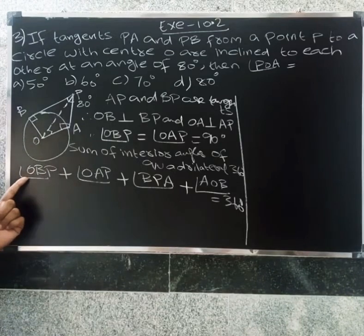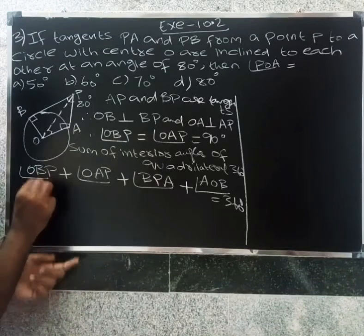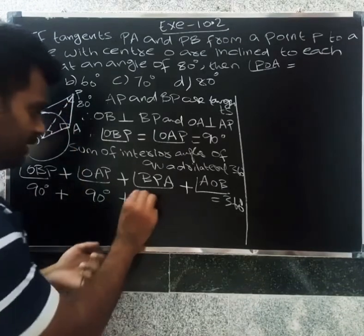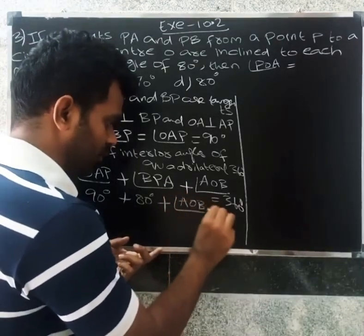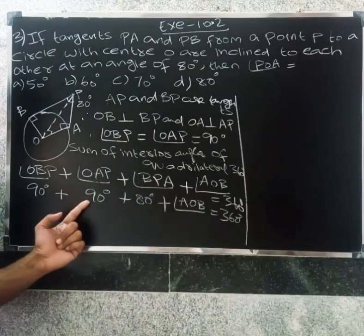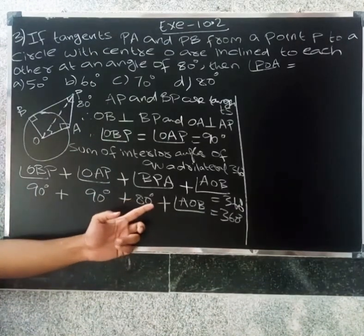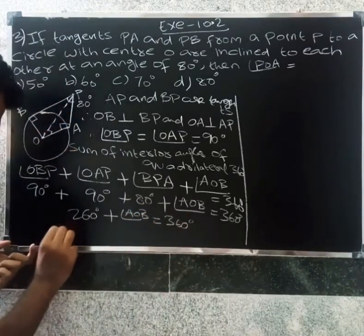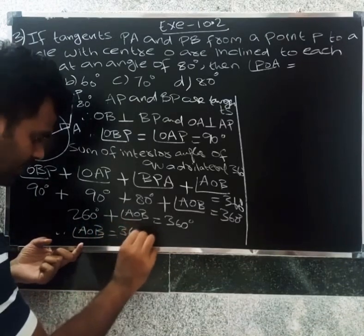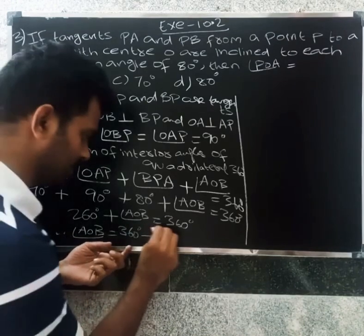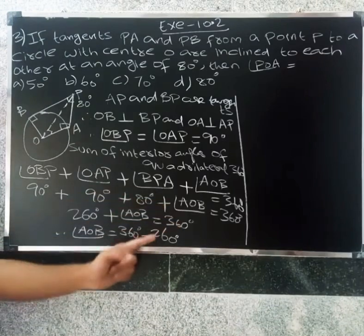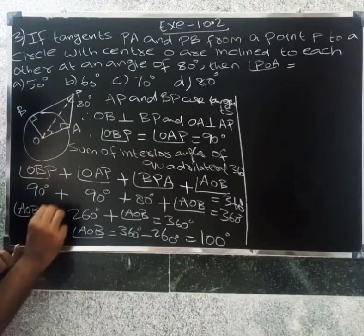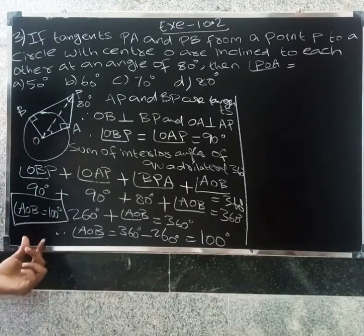Angle OBP equals 90 degrees and angle OAP equals 90 degrees, plus angle BPA which is 80 degrees, plus angle AOB equals 360 degrees. So 90 plus 90 is 180, plus 80 is 260. Therefore 260 plus angle AOB equals 360 degrees, so angle AOB equals 100 degrees.